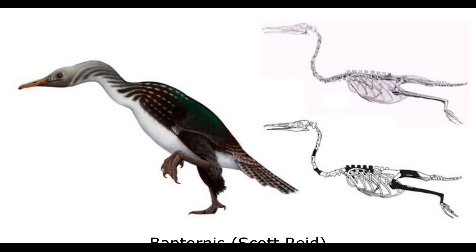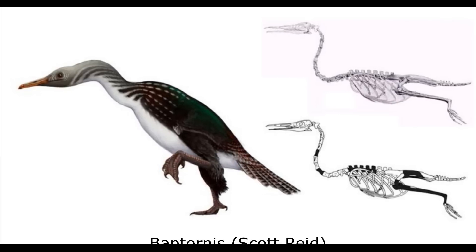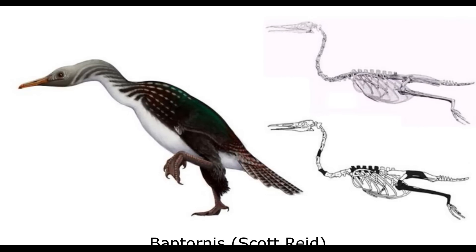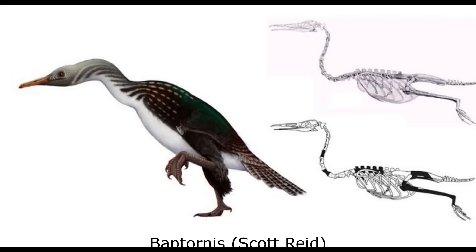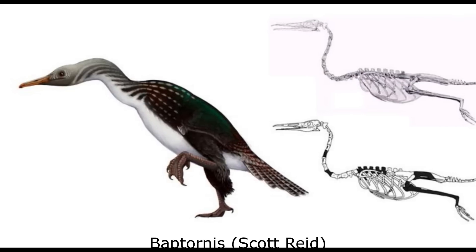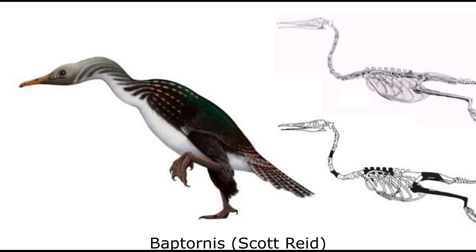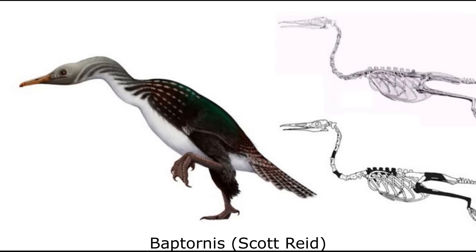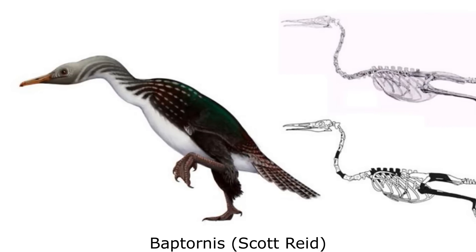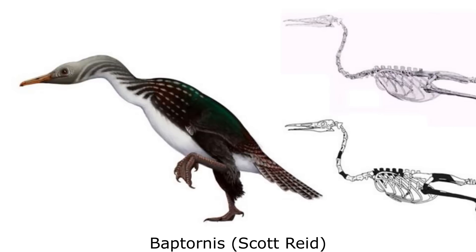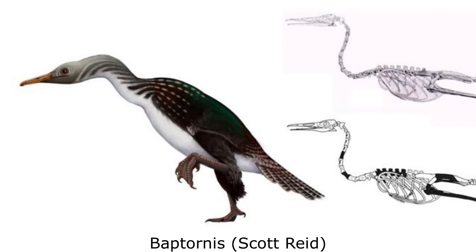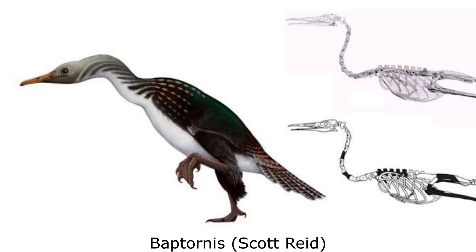The transition to a more fully aquatic niche can be seen in the genus Baptornis, which lived in and around the Western Interior Seaway between 83 and 80 million years ago, comparable to modern Anhingas in size. The heavy bones of this animal suggest a flightless lifestyle, with concentrations of the remains of juvenile individuals being frequently found in the northern parts of its range in Canada and Alaska. Like modern penguins, Baptornis was probably migratory, travelling up the Interior Seaway in the summer months to breed near the then temperate North Pole.